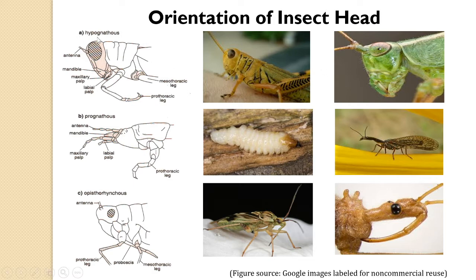The first type is hypognathous orientation. The second is prognathous head orientation, and the third is opisthognathous head orientation. In the hypognathous condition, the mouthparts are in a continuous series with the legs and this is probably the primitive characteristic feature. This kind of head occurs most commonly in phytophagous species living in open habitats, for example orthopteroid insects.